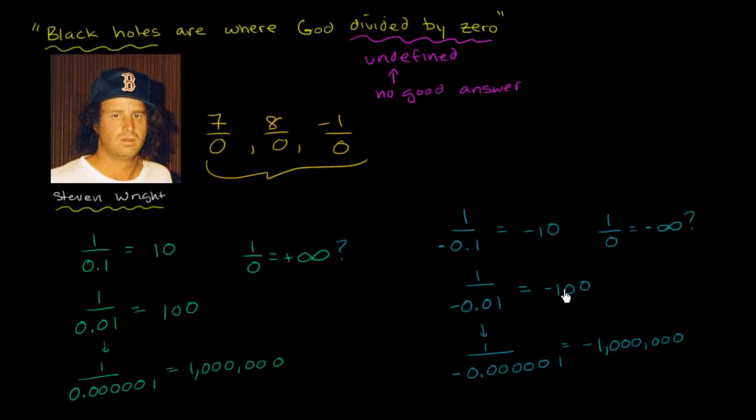So you can make an equally strong argument that it should be negative infinity. And this is why mathematicians say, well, there's just no good answer here, especially one that's consistent with the rest of mathematics. They could have just said it's equal to, you know, 42 or something like that. But that would make no sense. It's neither one of these values and it wouldn't be consistent with everything else we know. So they just left the whole thing undefined.